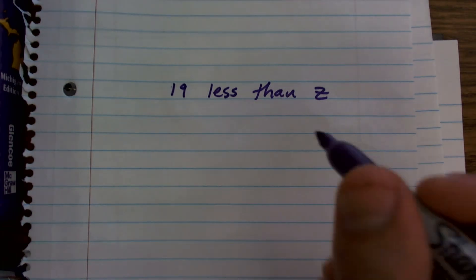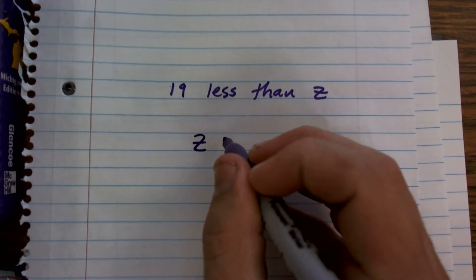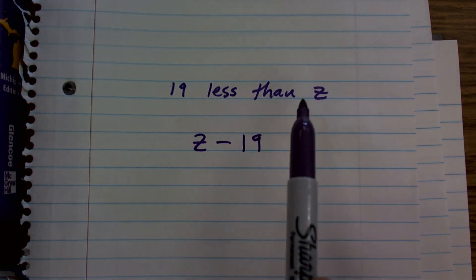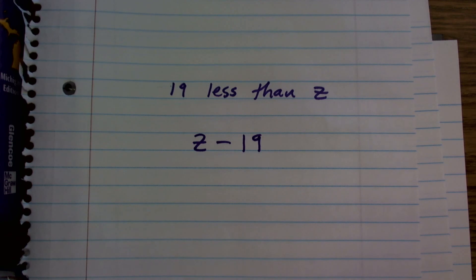So when I have 19 less than Z, that means whatever Z is, I'm going to subtract 19. And that's how we go from our sentence into an algebraic expression.